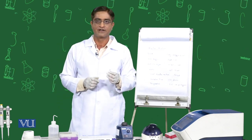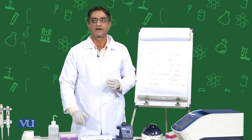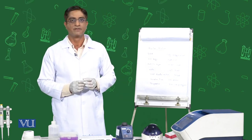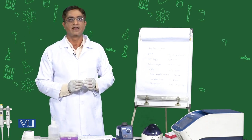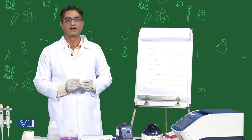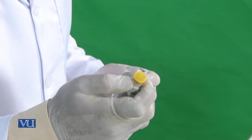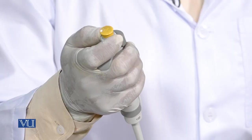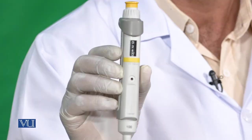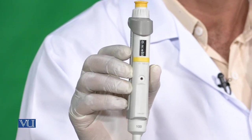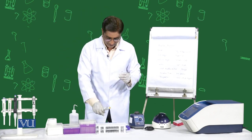Firstly, we will add water to our reaction tubes. We need 20 microliters of DNA, 5 microliters of buffer, and 1 microliter of enzyme — that is 26 microliters total, so we will add 24 microliters of water. I am using a yellow pipette and I adjust it to 24 microliters. We will take 24 microliters of water in each of the two tubes.